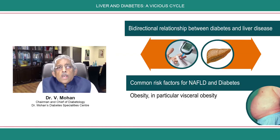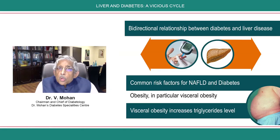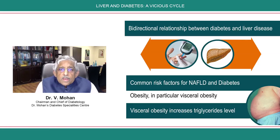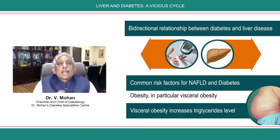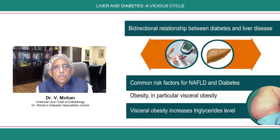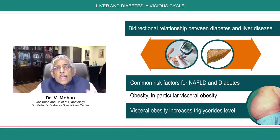For example, obesity is one of the commonest risk factors, and if you have visceral obesity, that is something which can lead to both diabetes as well as to non-alcoholic fatty liver disease. When you have excess visceral obesity, your triglyceride levels go up very much, and that gets deposited in the liver quite easily because fat can easily accumulate within it.